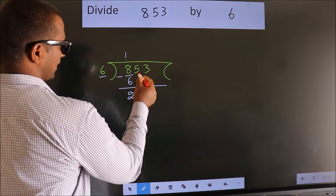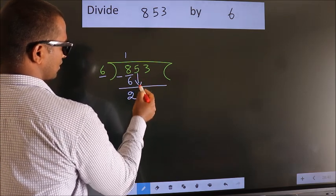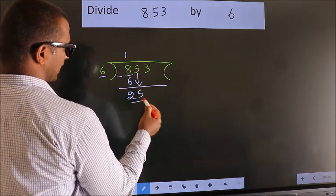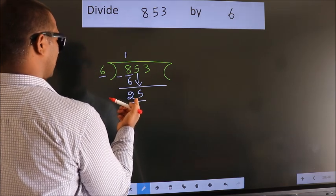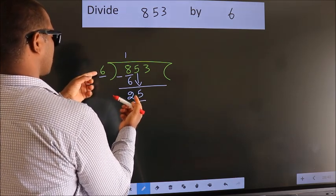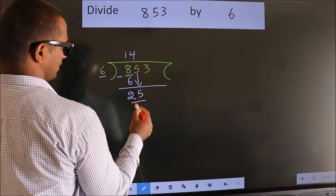We get 2. After this, bring down the beside number. So 5 down. 25. A number close to 25 in 6 table is 6 fours 24.